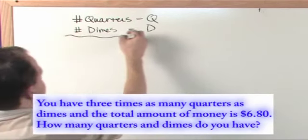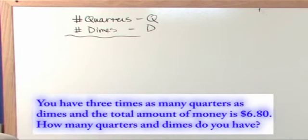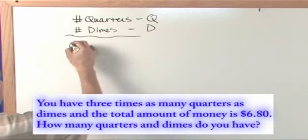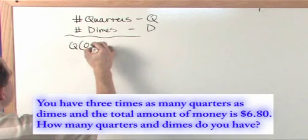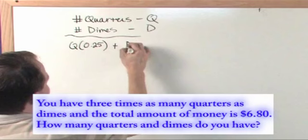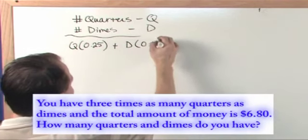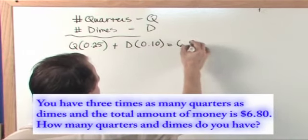So you're given, first thing, is the total amount of money you have is $6.80. So how would you do that? The number of quarters you have times 25 cents for each quarter plus the number of dimes you have times 10 cents for each one of these is $6.80.